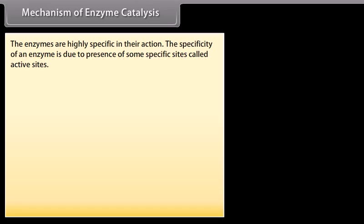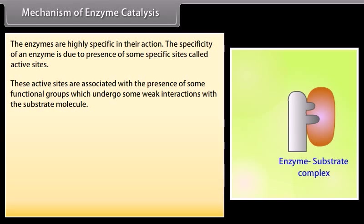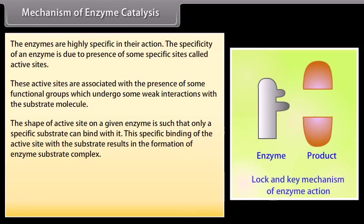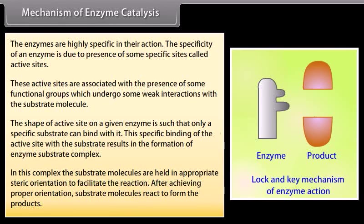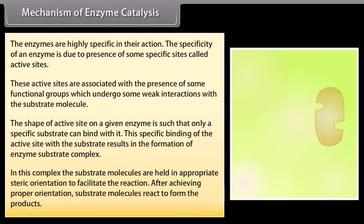Mechanism of enzyme catalysis: Enzymes are highly specific due to the presence of active sites — specific sites associated with functional groups that undergo weak interactions with the substrate molecule. Only a specific substrate can bind with a given active site. This specific binding results in the formation of an enzyme-substrate complex, in which substrate molecules are held in appropriate steric orientation to facilitate the reaction. After achieving proper orientation, substrate molecules react to form products. Product molecules, having no affinity for the enzyme surface, immediately leave so that fresh substrate molecules can bind with the active site.